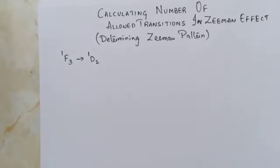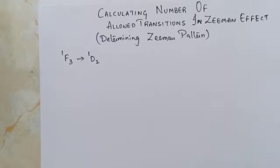In this video we will see how to determine the Zeeman pattern for any given transition. As we all know, the Zeeman effect is the splitting of spectral lines in the presence of an applied magnetic field.